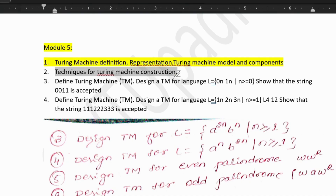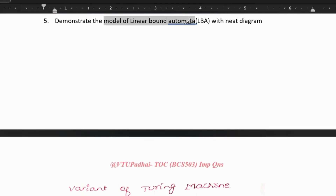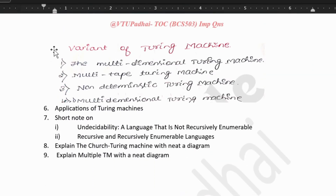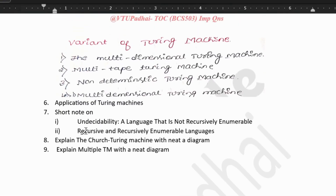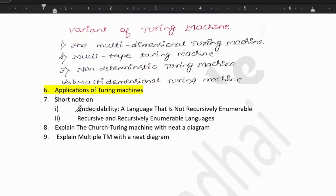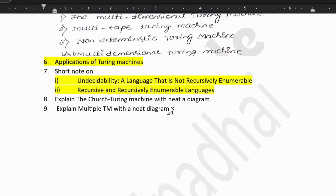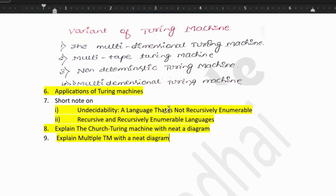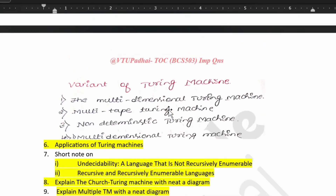Next, what are the techniques for Turing machine construction — again an important topic. Next we have model of linear bounded automata LBA with neat diagram. Then what are the variants of Turing machine — there are four variants. All four variants could be asked for 5 marks each, or they can say explain any two variants of Turing machine with neat diagram. Next, what are the applications of Turing machines — a three mark question. Then a short note on undecidability, a language that is not recursively enumerable — very important, this was in previous year paper also. Next, recursively enumerable language — again a theory topic. And then the Church-Turing thesis and multiple Turing machine with neat diagram.